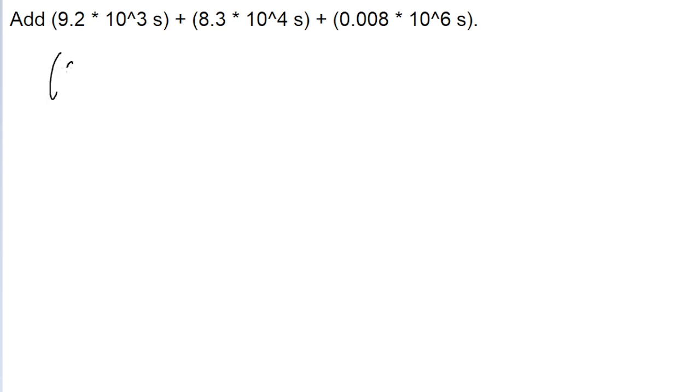So for example, our first number is 9.2 times 10 to the power of 3. Now, we can add this to 8.3 times 10 to the power of 4 by simply adding the coefficients if the powers were the same. Which in this case, they're not.